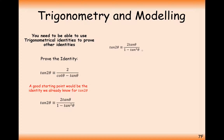With fraction-type trig identities, remember you can multiply or divide the top and bottom by the same amount and you'll get something equivalent. Now, matching up the numerators: we've got 2 here and 2tanθ there — ideally we want to get rid of the tan on top. So we're going to divide all terms in the fraction by tanθ, effectively doing a divide by tanθ over tanθ, which keeps the expression equivalent.